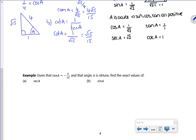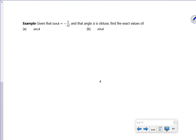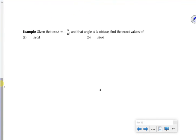So we've got another example here. So then it says, given that tan is minus 5 over 12, and A is obtuse, find the exact values for secant and sine. So I know secant is 1 over cos, don't I? So if I think about my triangle,